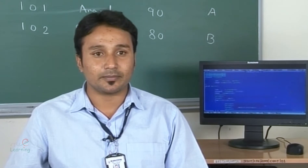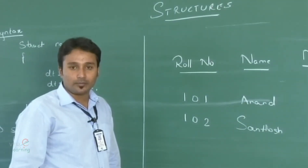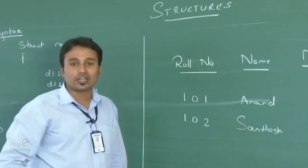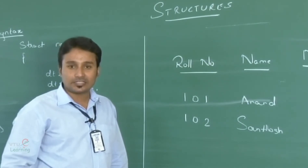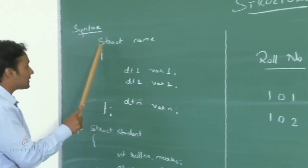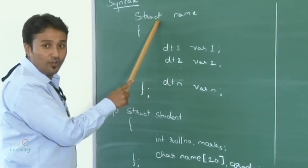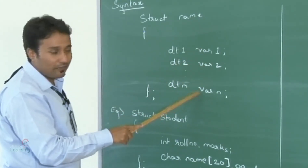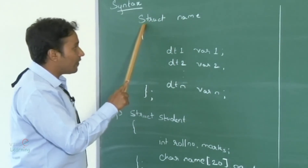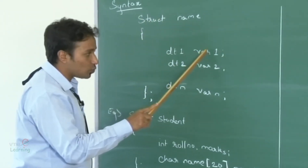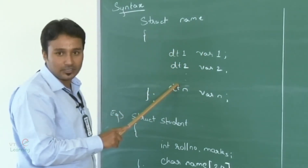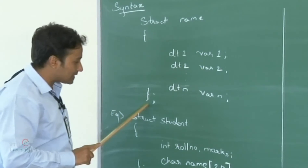Before going into the program, let us understand the logic by studying an important concept known as structures. Structures are the collection of dissimilar data types. The syntax is: struct name, where struct is a keyword followed by the name of the structure and the declaration of their corresponding variables. Inside the structure we have variable 1, 2, up to variable n with their respective data types, closed with a flower bracket and a semicolon.